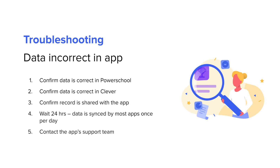If it is identified that data is incorrect in an application, please follow these troubleshooting steps. First, confirm the data is correct in PowerSchool. Second, confirm the data is correct in Clever. If necessary, initiate a sync with PowerSchool on the Sync Settings page in the Clever dashboard. Third, review the record in Clever and confirm it is shared with the application.